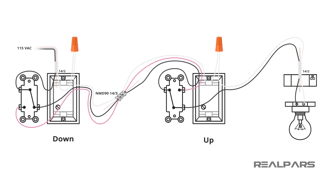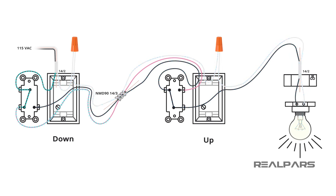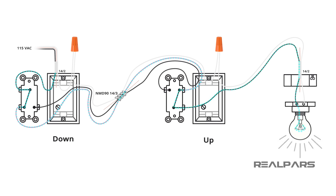Let's see how it works. With the switches in the positions shown, the electricity will flow from the line wire through the light and back to the neutral wire. What happens if we change the down switch position? The electrical circuit is broken and the light goes off. Let's see what happens if we change the up switch position. If all goes well, the light will come on. With the switches in the new positions, the electricity will flow from the line wire through the light and back to the neutral wire.